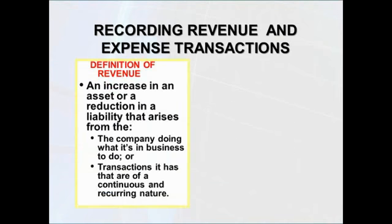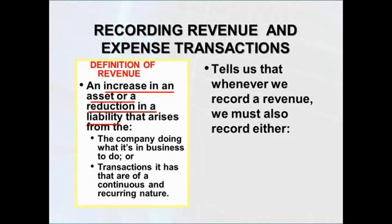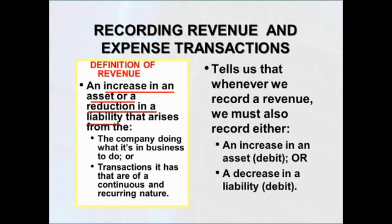We can get some help by looking at the definition of a revenue. A revenue is an increase in an asset or a reduction in a liability that arises from doing what you're in business to do — your continuous and ongoing activities. That tells us that whenever we record a revenue, we also have to record either an increase in some asset account (remember we increase assets with a debit) or a decrease in some liability account. So when we record a credit to a revenue account, we'll also be recording either a debit to an asset account or a debit to a liability account.